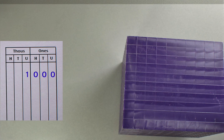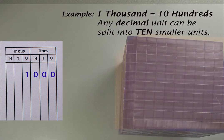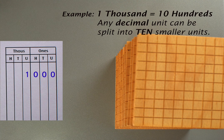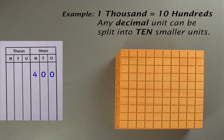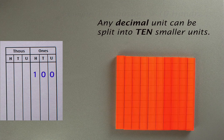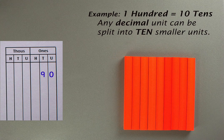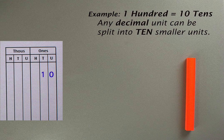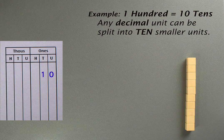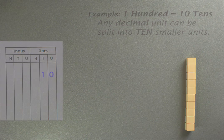Working in the other direction, we can see that any decimal unit can be split into ten smaller units. That's what we mean by decomposition. So a thousand can be split or decomposed into ten hundreds, a hundred can be split or decomposed into ten tens, and a ten can be split or decomposed into ten units.